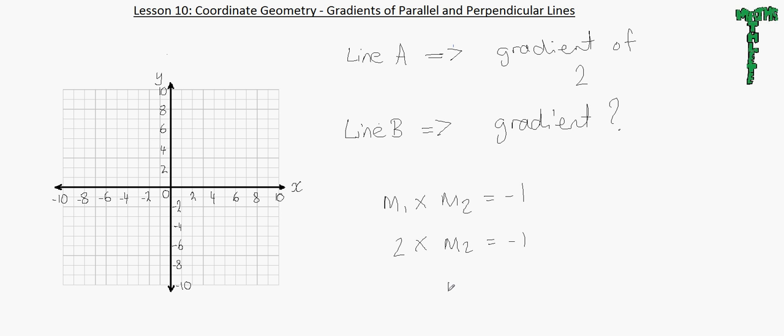So, the answer for gradient B would be M2. Now, let's rearrange this. M2, if we take the 2 under the minus 1, it becomes negative one half. Notice how it is the negative reciprocal, the exact negative reciprocal. And so, that would be the gradient.